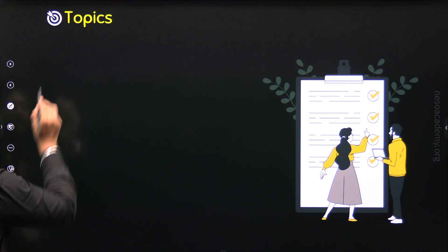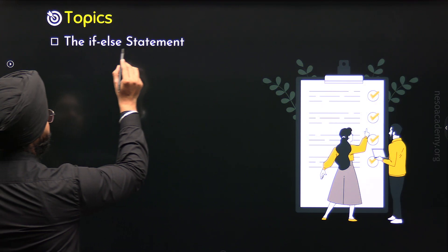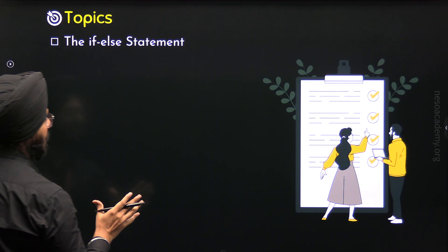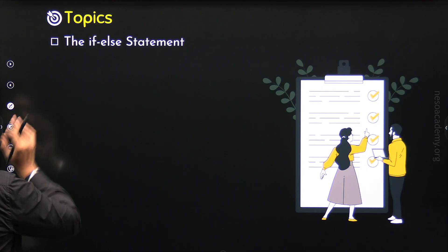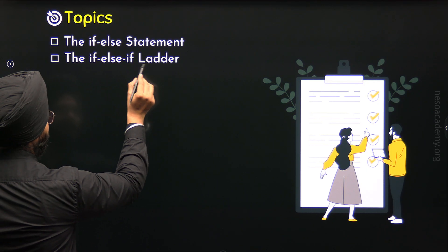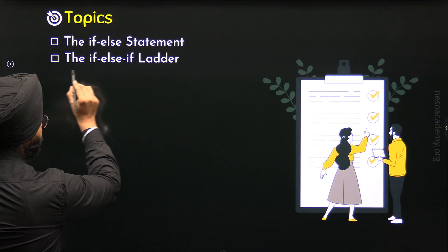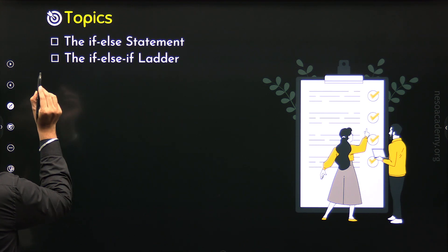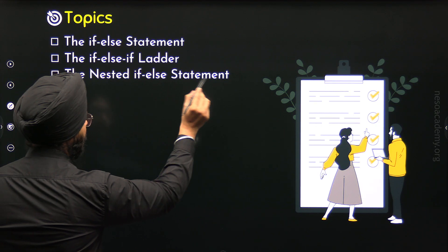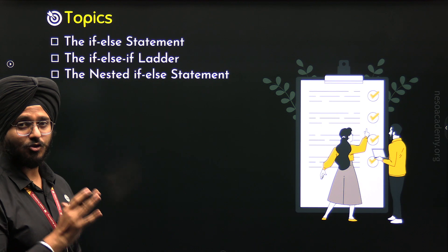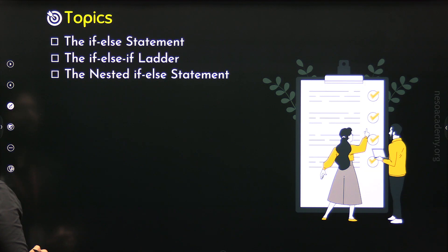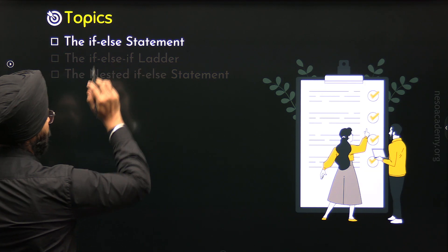The first topic of this lecture is the IF ELSE STATEMENT. We will properly understand the IF ELSE STATEMENT. Then we will move to the second topic to understand the IF ELSE IF LADDER. After understanding this topic, we will move to the third topic to understand the NESTED IF ELSE STATEMENT. So these are the topics of this lecture. Let's start with the first topic, the IF ELSE STATEMENT.